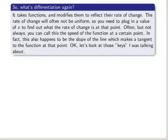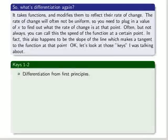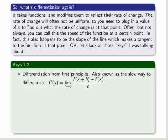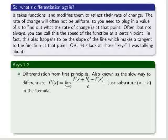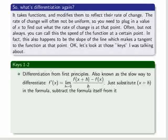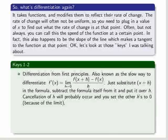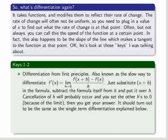Let's look in more detail at those five keys. Differentiation from first principles. This is also known as the slow way to differentiate. That's the equation as shown. What you do is you substitute x plus h in the formula, subtract the formula itself from it, and put it over h. Then you take the limit as h tends to zero, and you get your answer. It should turn out to be the single-term differentiation as explained next.